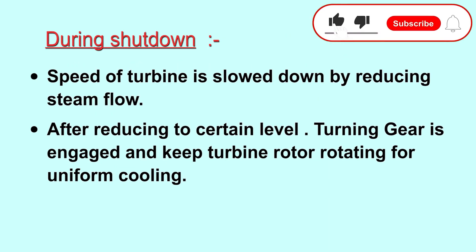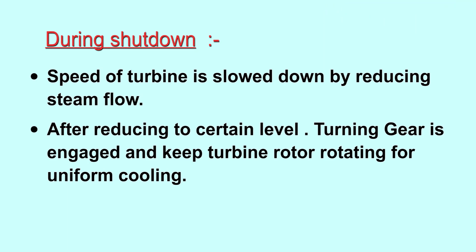Now, in the case of shutdown, the turbine rotor is never brought to a standstill instantaneously. The speed of the turbine is slowed down to a certain level by reducing steam flow through it. Afterwards, the turning gear keeps the turbine rotor rotating for uniform cooling of the turbine rotor.